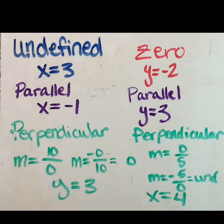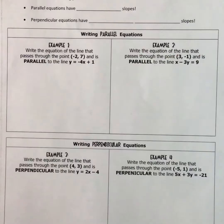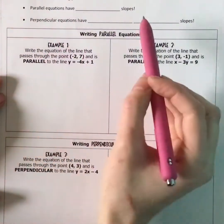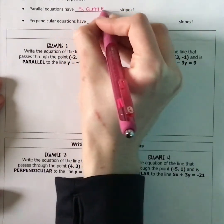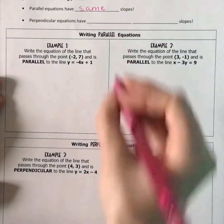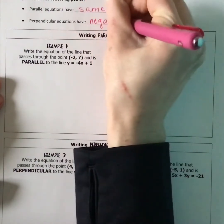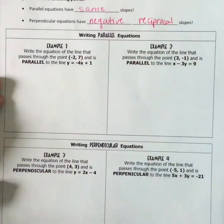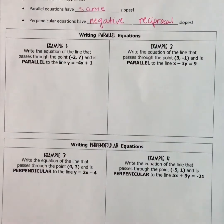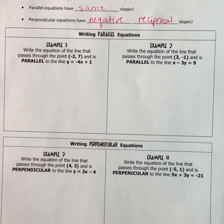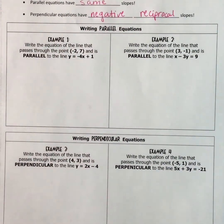Let's take a practice at writing a parallel equation given a point and a linear equation. Keep in mind: parallel equations always have the same slope, and perpendicular equations have the negative reciprocal slope. I'm going to do examples 1 and 4. I'll upload the key for examples 2 and 3 so you can check those as well. Let's start with example 1.